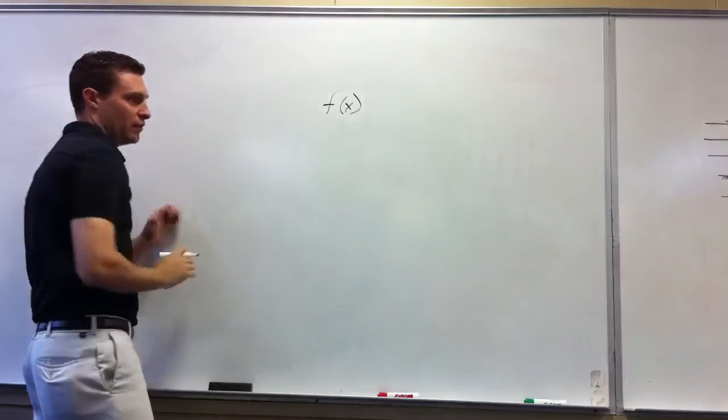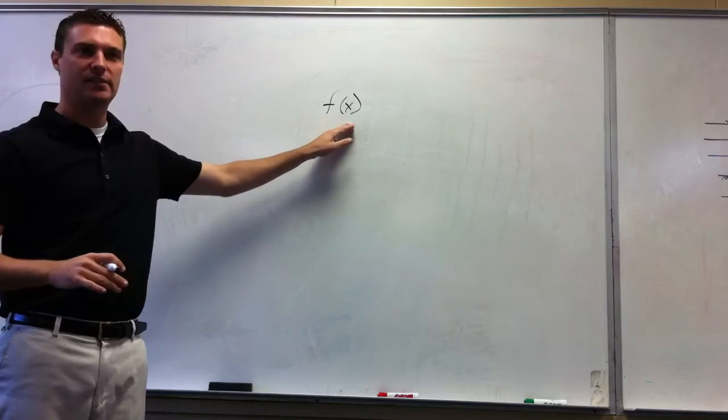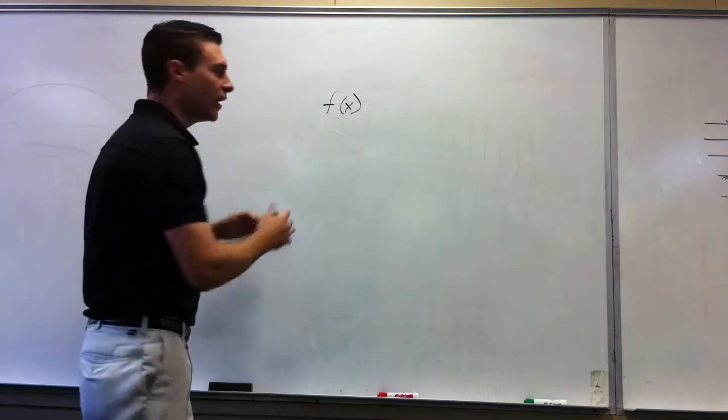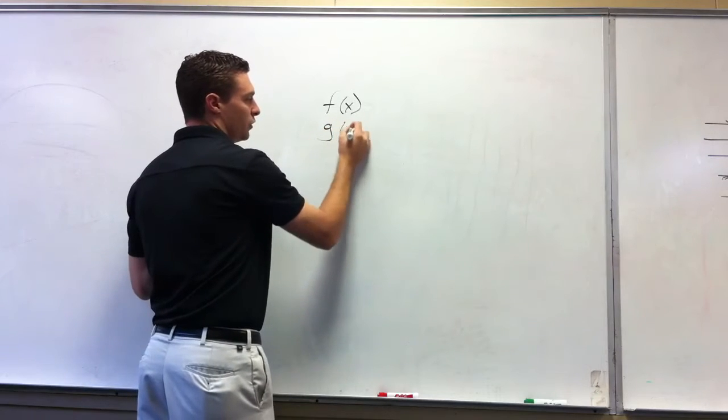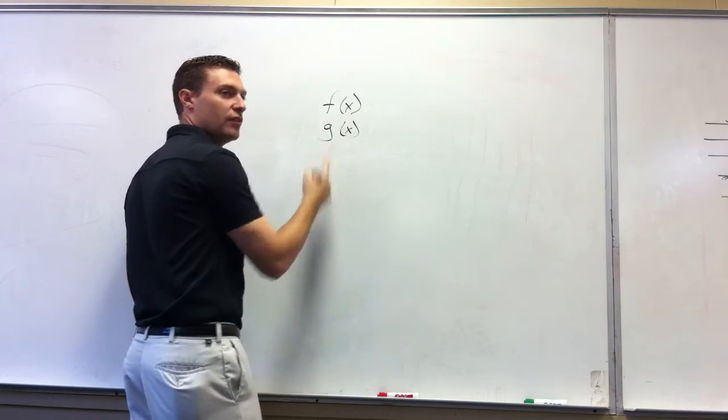This notation right here, this is function notation. And we say this as f of x. So when you see this this way, it's f of x. If there's another letter in front, this would be g of x.